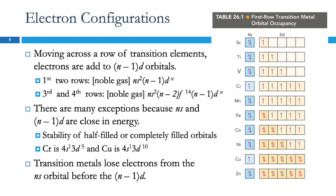If we look at moving across a row of transition elements, we're talking about periods 4, 5, 6, and 7. For the first two rows — periods 4 and 5 — the electron configurations are going to be the previous noble gas, ns2, and (n-1)dx.